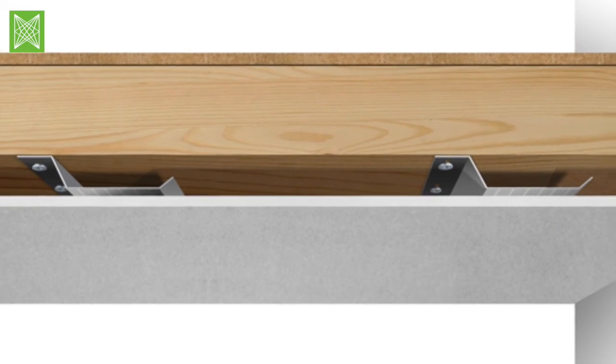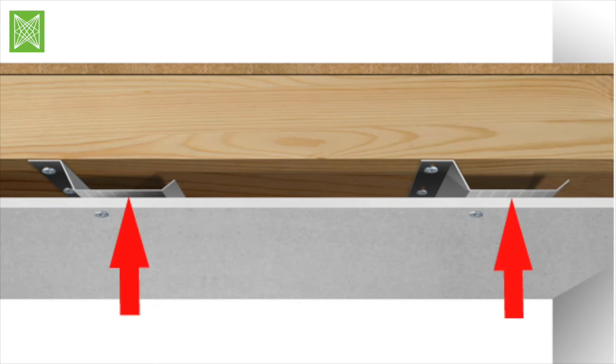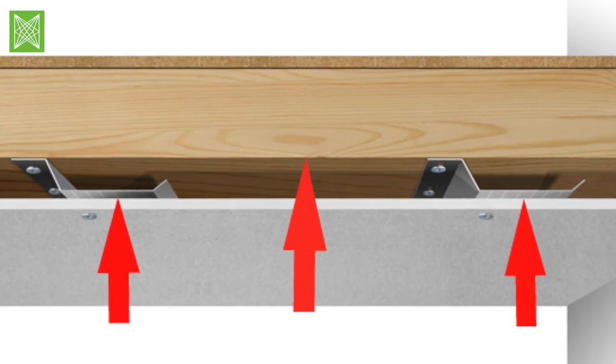Offer up the first sheet of plasterboard to the underside of the resilient bar and fix using drywall screws. It is imperative that the plasterboard is fixed to the resilient bar only and not through to the timber joist.